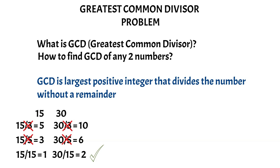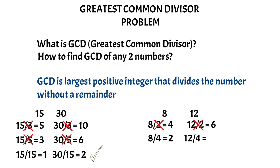Let's take one more example: 8 and 12. What will be the greatest common divisor between 8 and 12? Is it 2? Because 8 can be divided by 2 and also 12 can be divided by 2. But that is not the greatest common divisor. The greatest common divisor has to be 4 because 8 divided by 4 is 2 and also 12 divided by 4 is 3. So I hope you are able to get what a greatest common divisor means between two numbers.